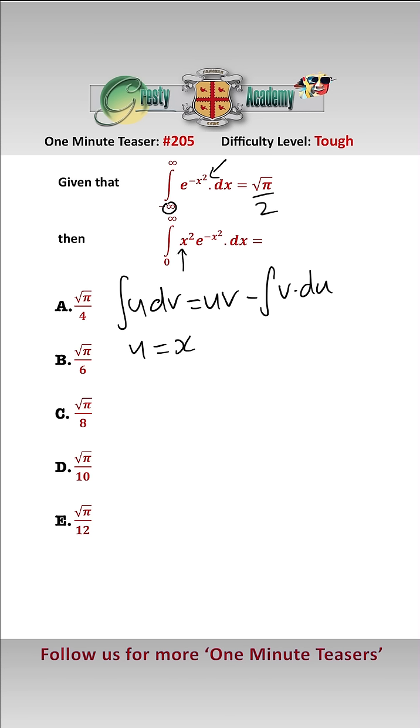But we're going to make u equal x. We're going to split this x squared into x times x for reasons which will become apparent. And dv equals x e to the minus x squared, i.e. du equals dx and v equals minus e to the minus x squared over 2.